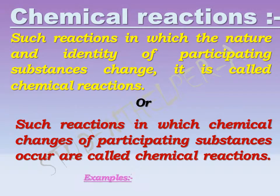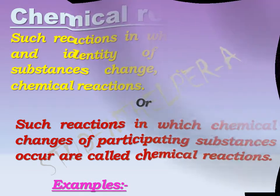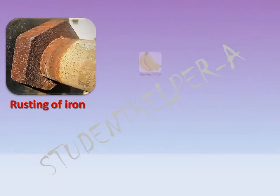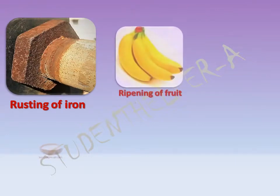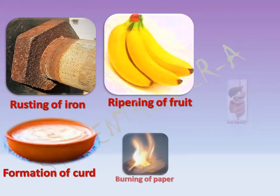Examples of chemical reactions: rusting of iron, ripening of fruit, formation of curd, burning of paper, and food digestion.